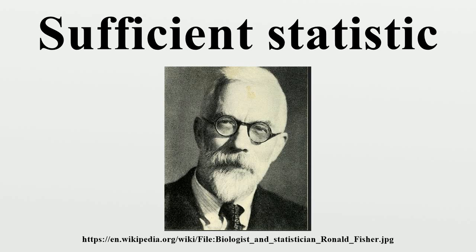Other types of sufficiency. Bayesian sufficiency: An alternative formulation of the condition that a statistic be sufficient, set in a Bayesian context, involves the posterior distributions obtained by using the full data set and by using only a statistic. The requirement is that for almost every x, the posteriors agree. It turns out that this Bayesian sufficiency is a consequence of the standard formulation; however, they are not directly equivalent in the infinite-dimensional case. A range of theoretical results for sufficiency in a Bayesian context is available.